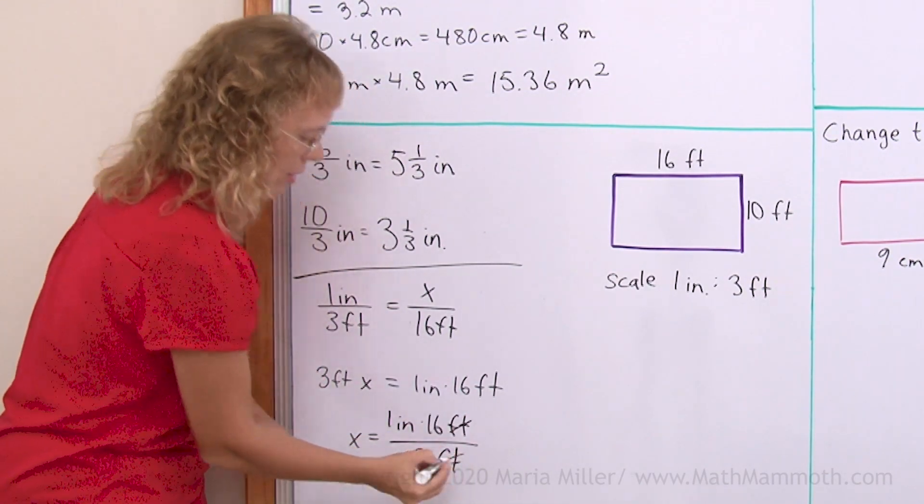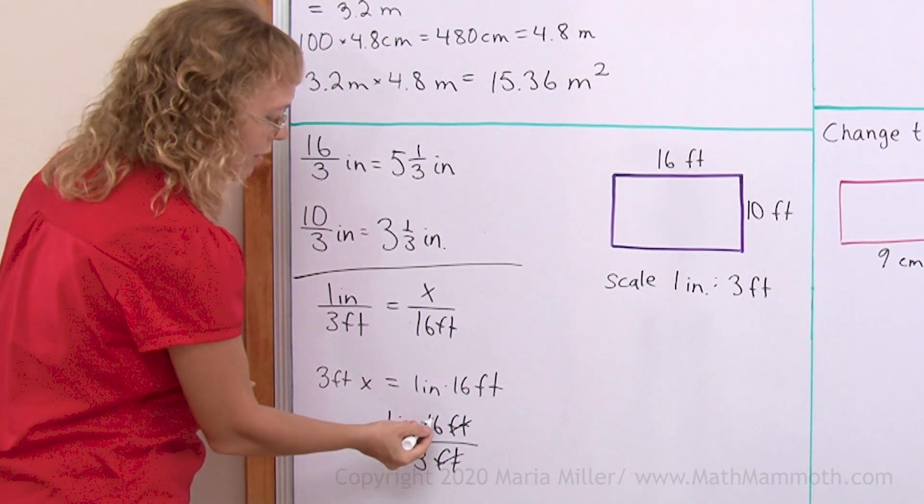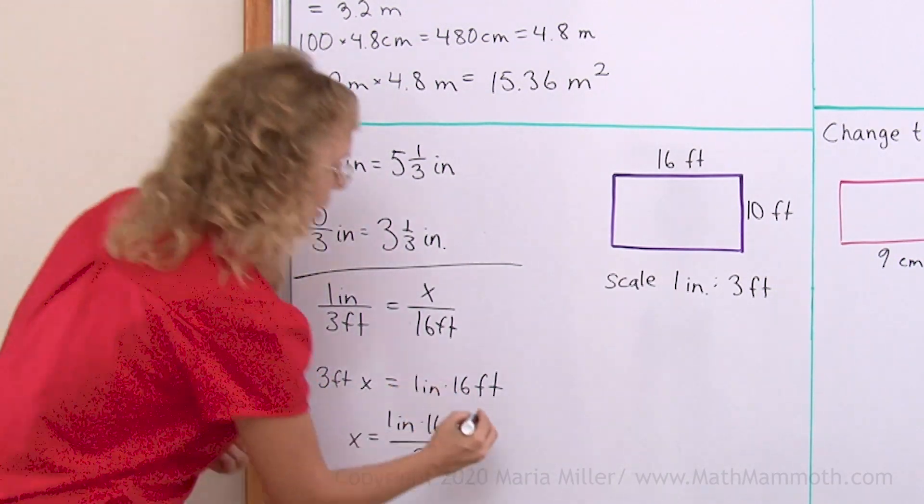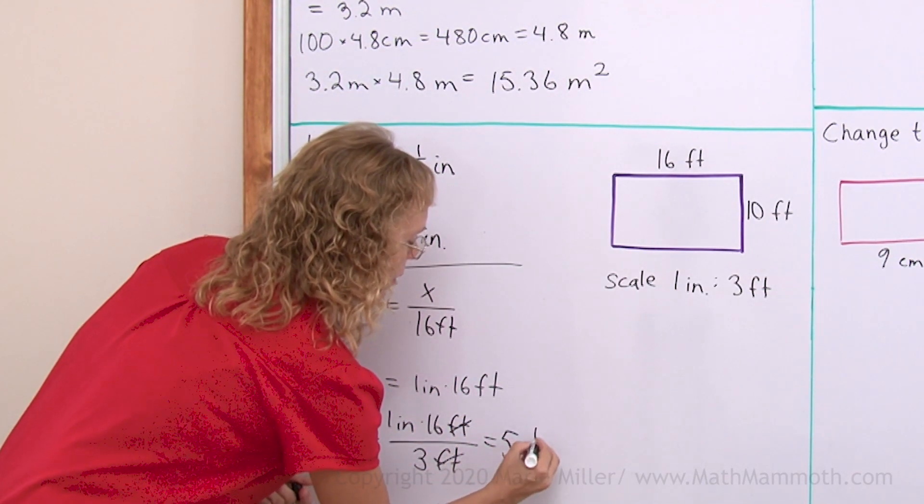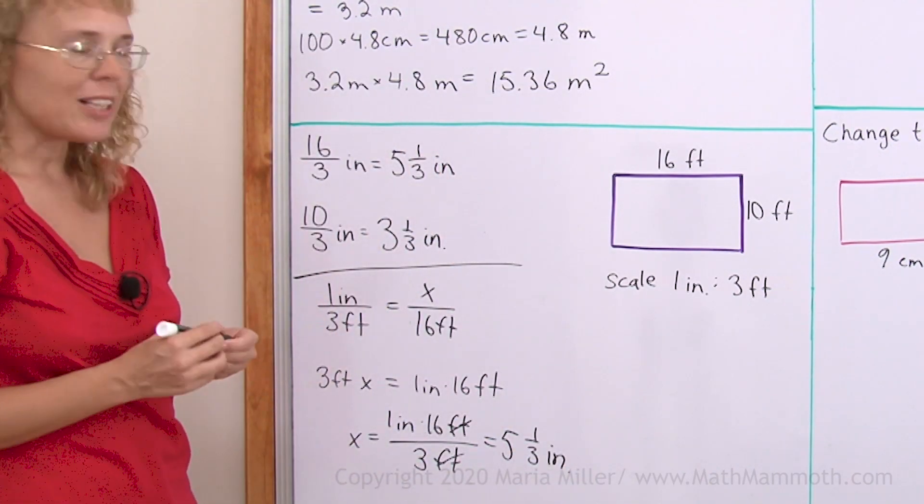Of course the feet units cancel out. So you have 16 divided by 3 once again. And you get 5 and 1 third of an inch. The same result.